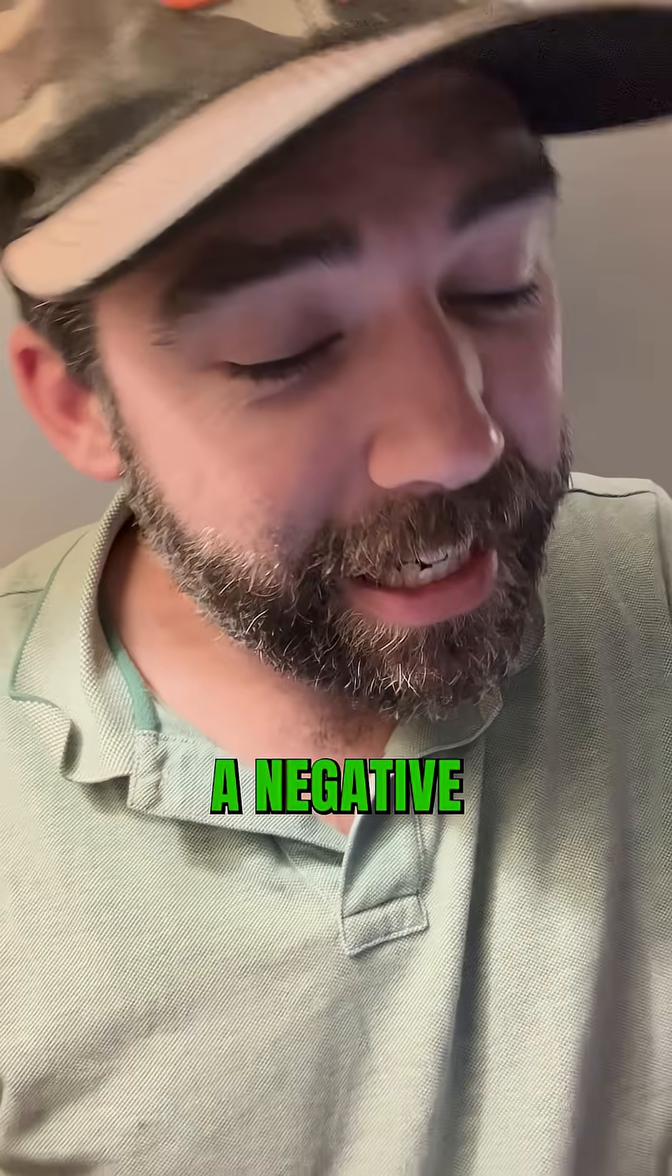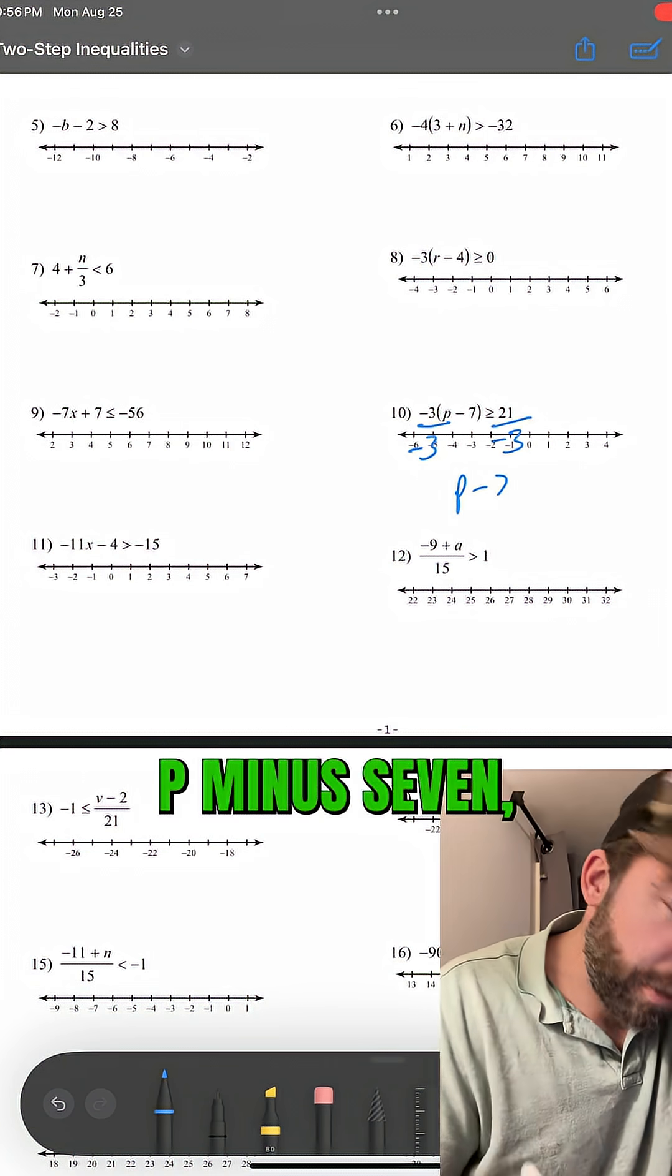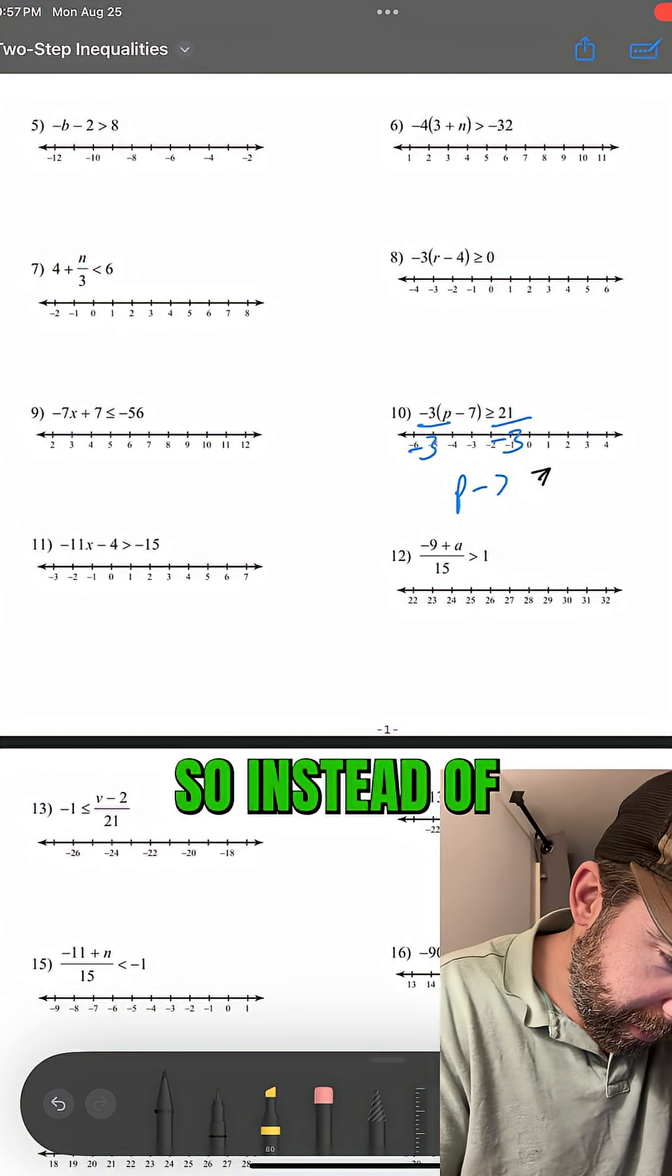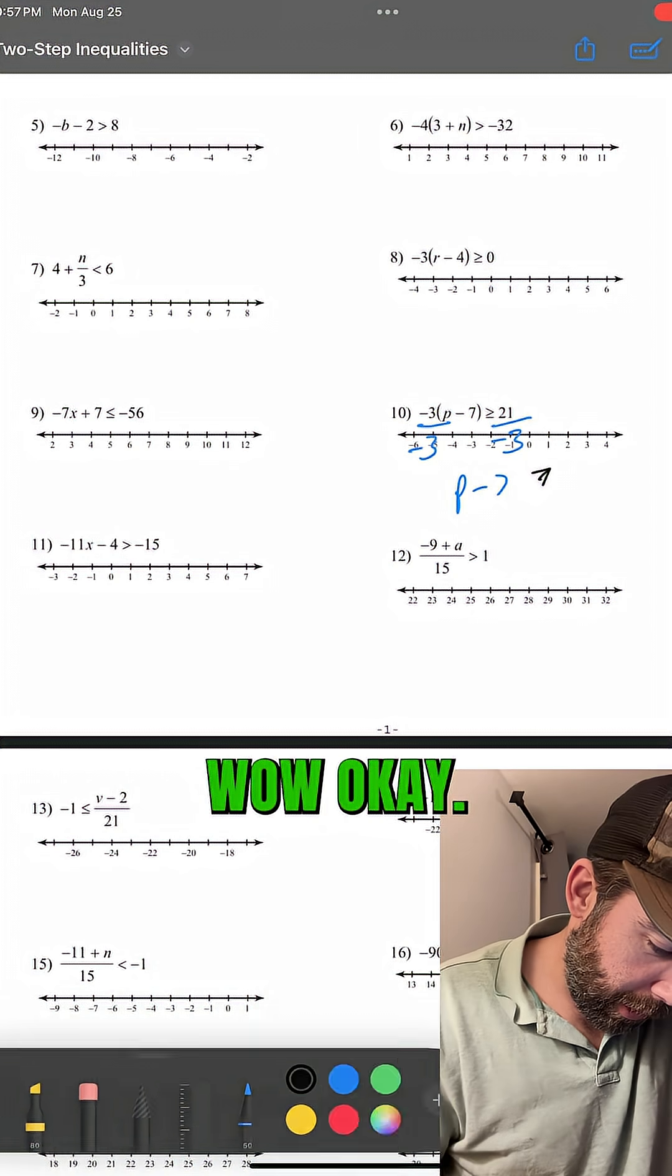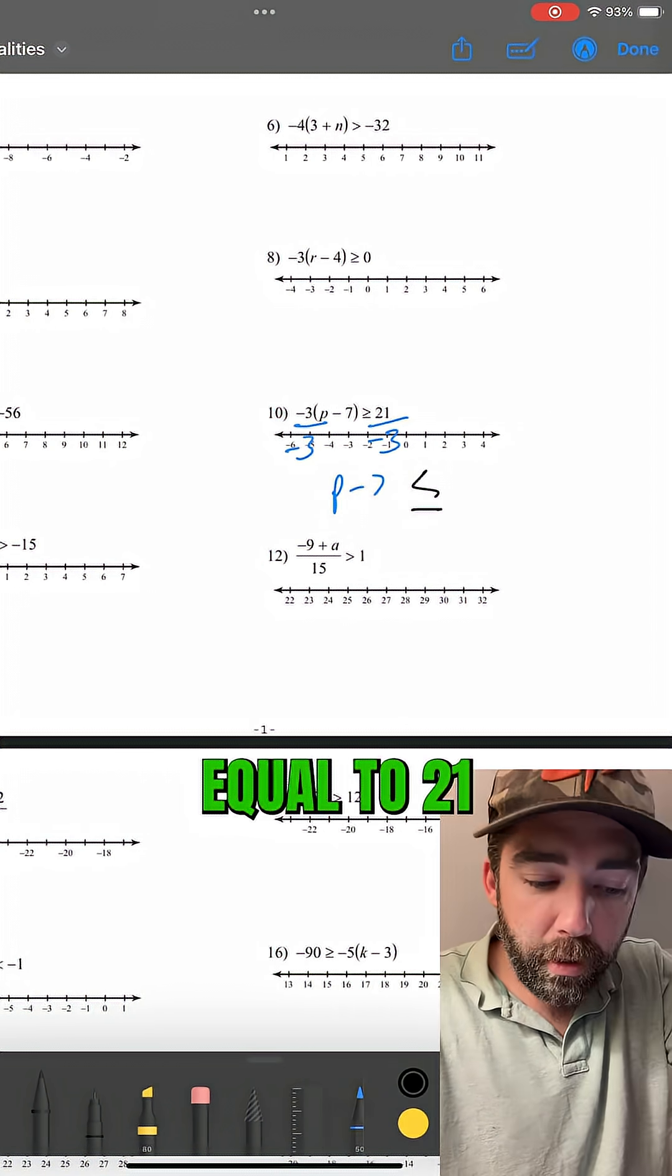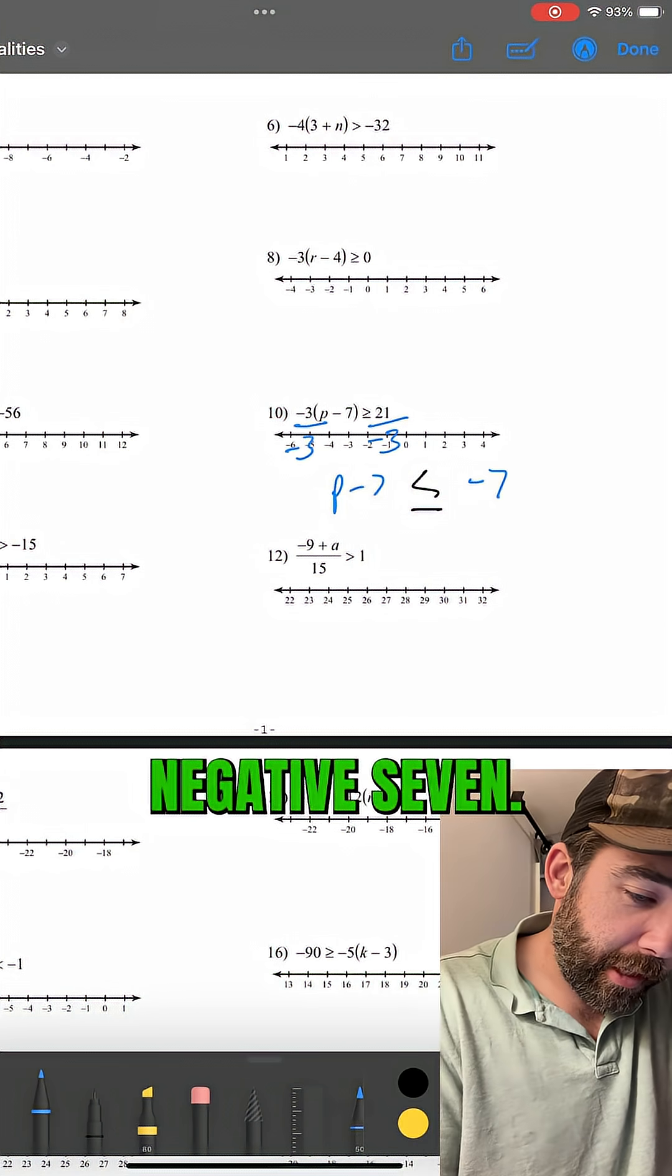Well, remember, when we divide by a negative, p minus 7, we flip the sign. The sign changes. So instead of greater than, it's now less than or equal to 21 divided by negative 3, which is negative 7.